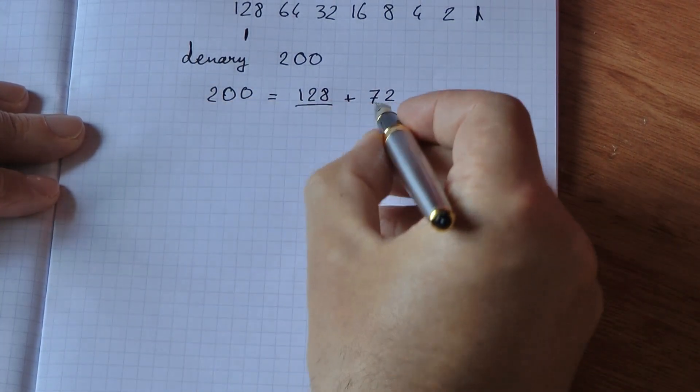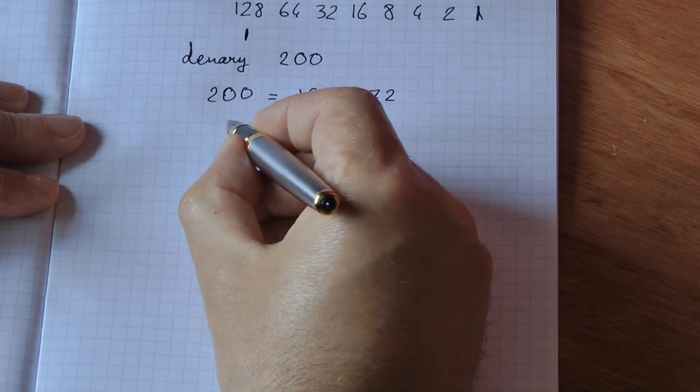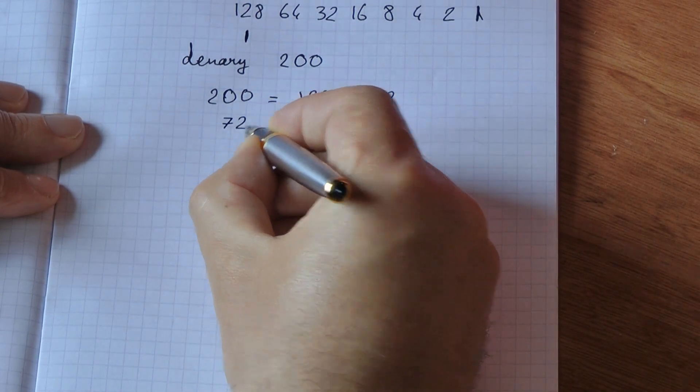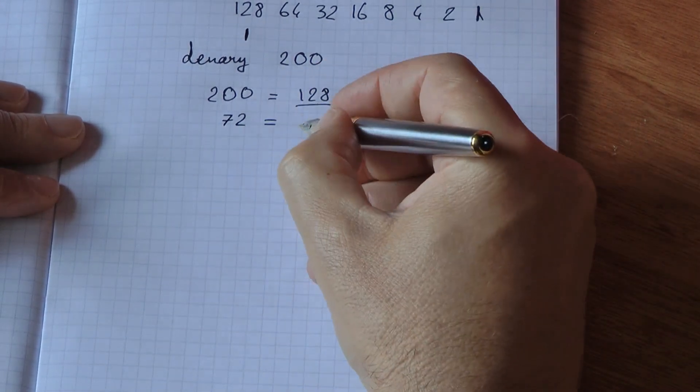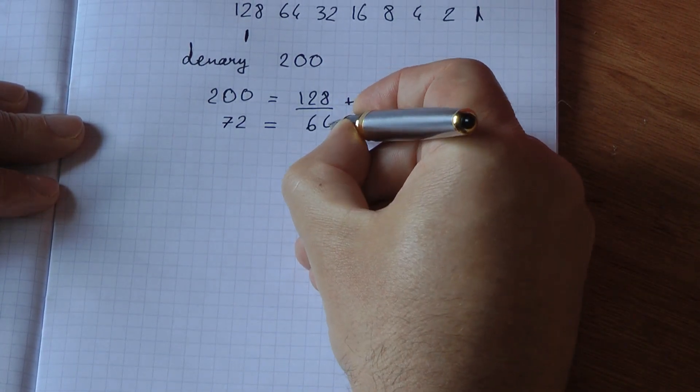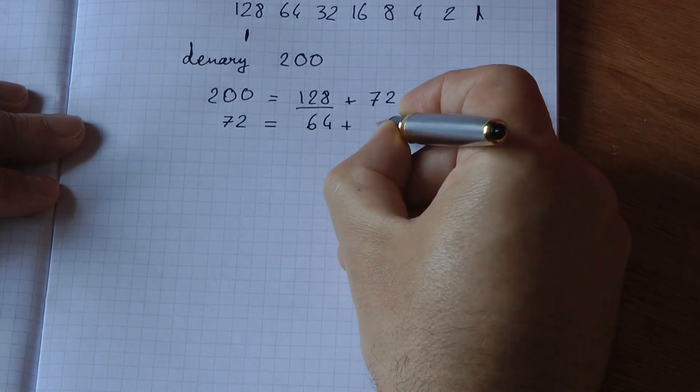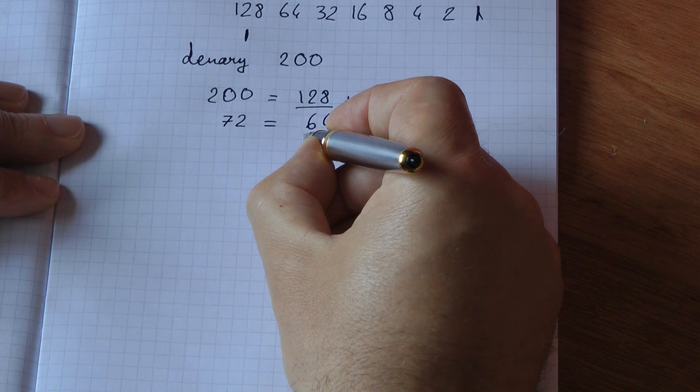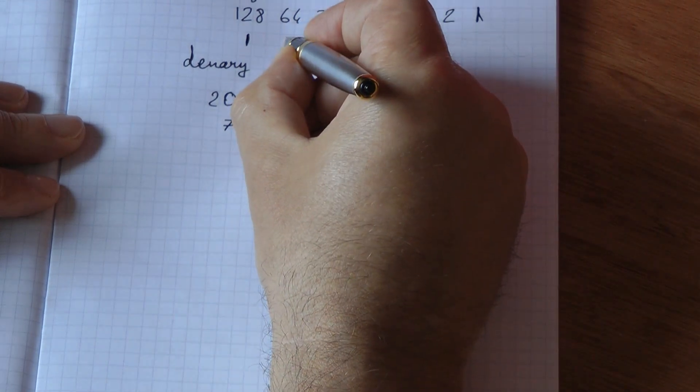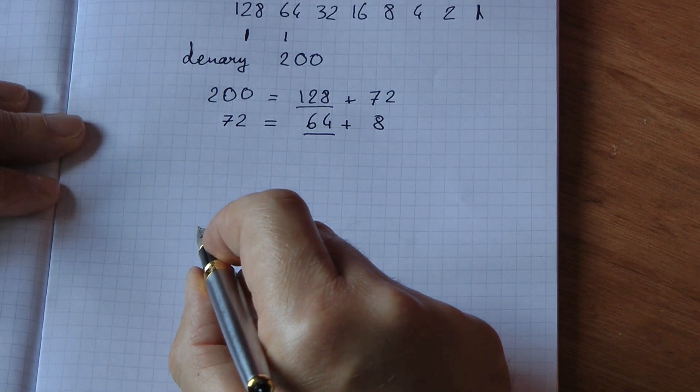And I repeat the process with my remainder. So 72, can we fit 64 inside 72? Yes, 72 is 64 plus 8. So for my 64, I put a 1 in this binary column.